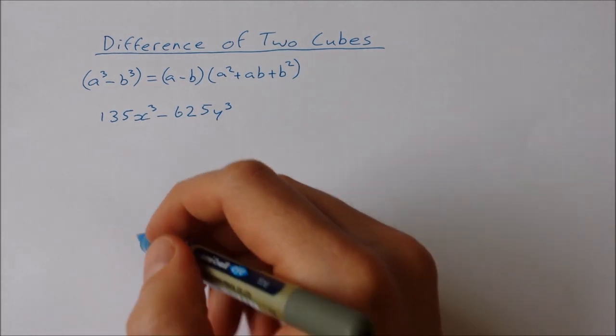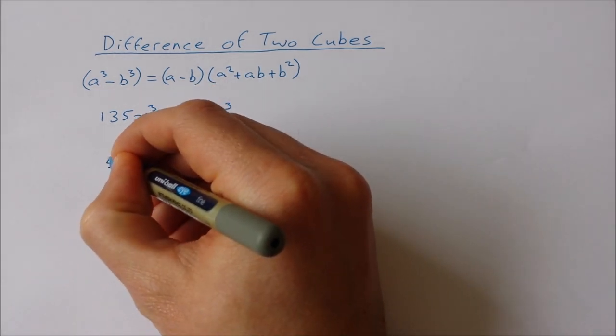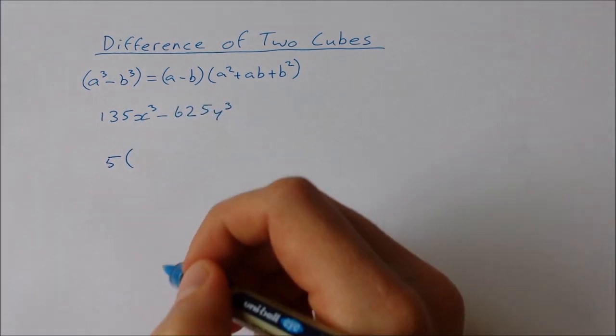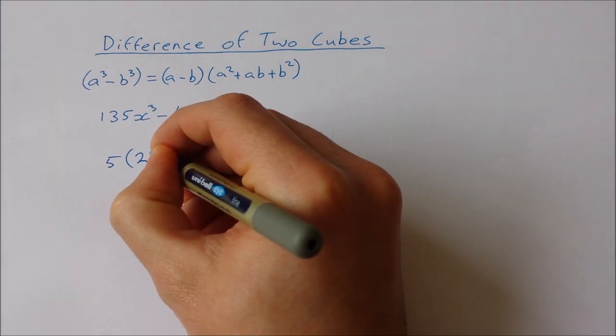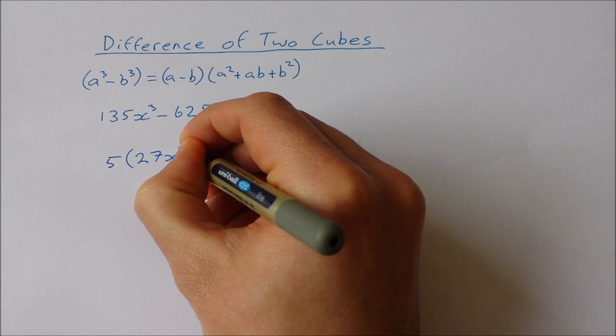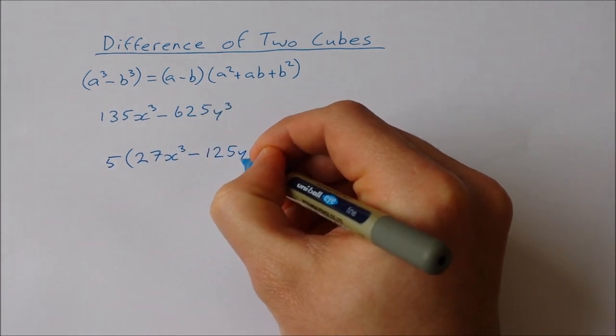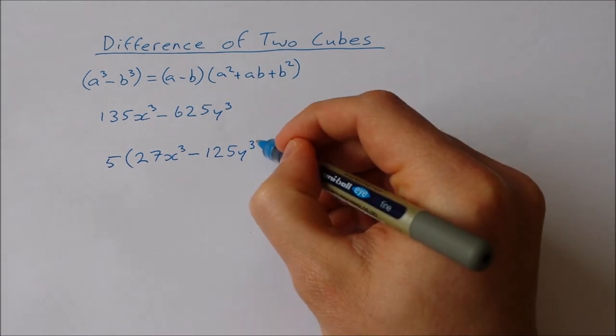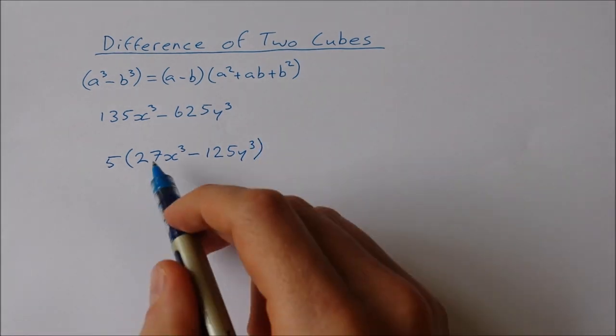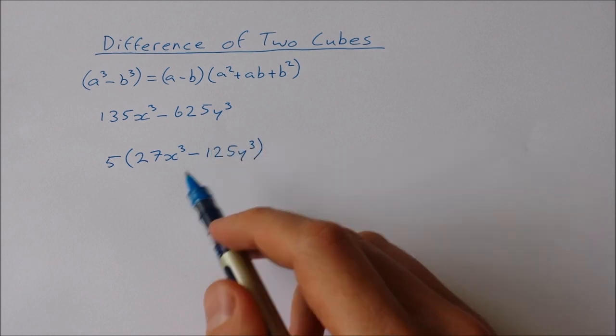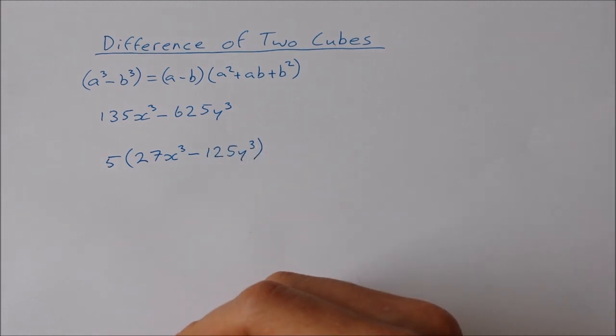If we take 5 outside the brackets, we're going to be left with 27x³-125y³. Now 27 and 125 are both cubic numbers, so I can write 27 as 3³ and I can write 125 as 5³.